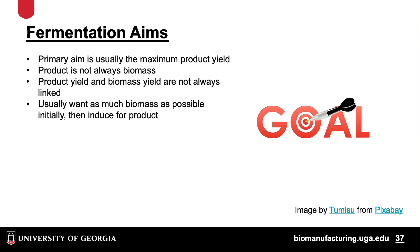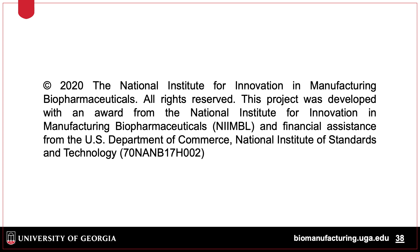In conclusion, the primary aim of fermentation is maximizing product yield. This may not necessarily be biomass, because the two are not always linked. Common strategies include building up biomass, then using an inducible genetic system to produce a product at high biomass levels. In the next lecture, we will go into details of the simplest fermentation platform, batch fermentation.